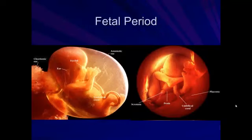Then in the fetal period, the third and final period, which is pretty much from two months up to birth, we're very human-like, just growing bigger. On the left, we see a fetus who is probably towards the two- to three-month mark and is about the size of a person's thumb. And on the right, we see a fetus that's getting towards the end of the term, which is 40 weeks of development, and it's pretty big and packed in the womb.